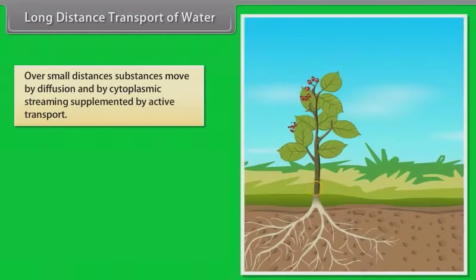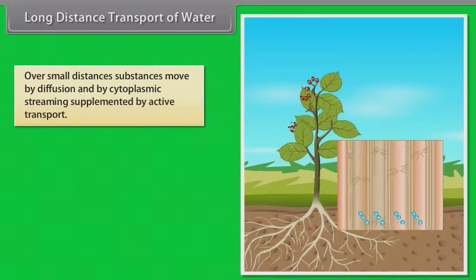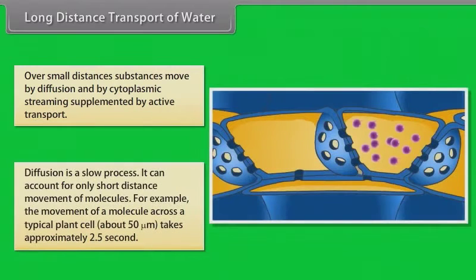Long distance transport of water. Introduction. Friends, as we all know that over small distances, substances move by diffusion and by cytoplasmic streaming, supplemented by active transport. Long distance transport of substances within a plant cannot be by diffusion alone. Diffusion is a slow process. It can account for only short distance movement of molecules. For example, the movement of a molecule across a typical plant cell takes approximately 2.5 seconds.